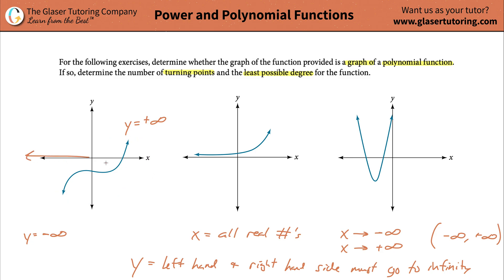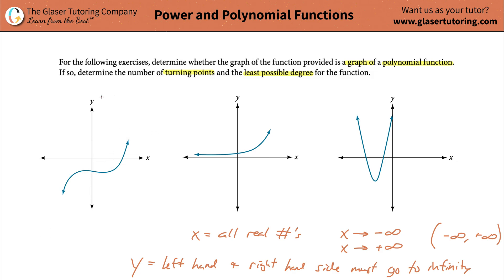It goes on and on and on in the negative x, goes on and on and on in the positive x - that has to be met. And it goes on and on and on to some infinite value in the y direction on the left hand side, which happens to be negative - that's fine. Same thing on the right hand side, it goes out to infinity, and it's positive. So we can conclude that this is indeed a polynomial.